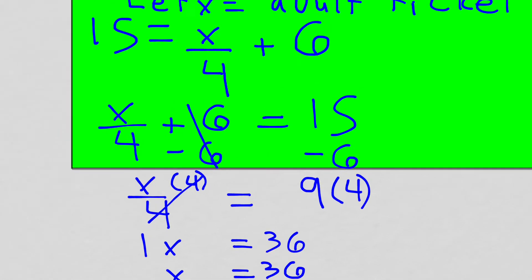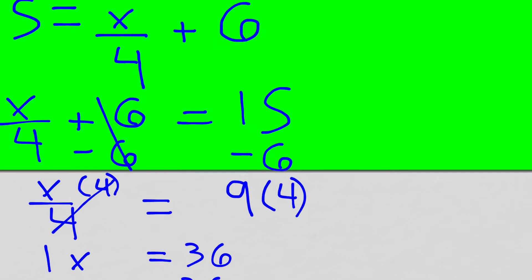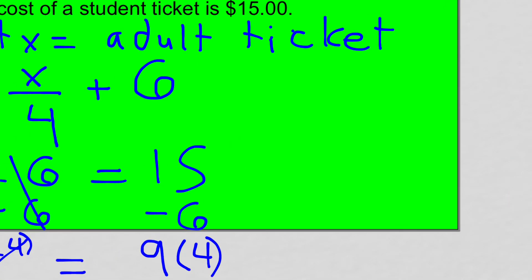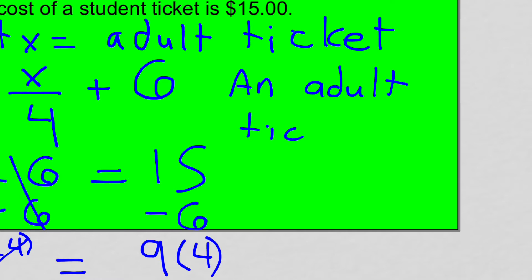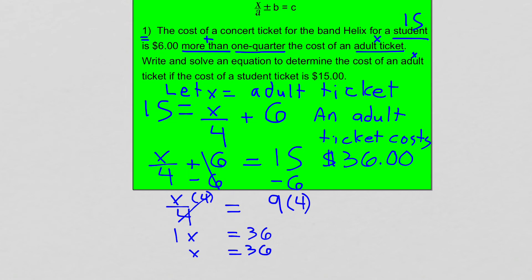We said X was the cost of an adult ticket, so that's what an adult is going to pay to go see Helix these days. I might just download the song for a lot cheaper and call it a day. An adult ticket costs $36 — that's how much you're paying to go see Helix, who are really a one-hit wonder in my opinion. My apologies if there are many Helix fans out there. Let's look at some more of these kinds of equations.